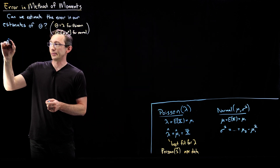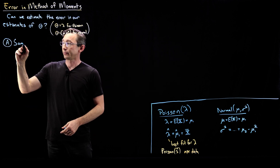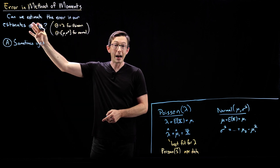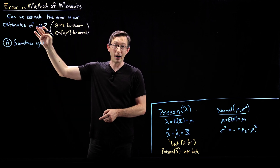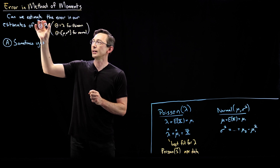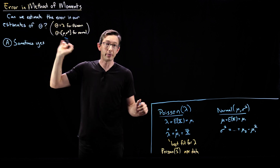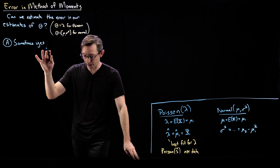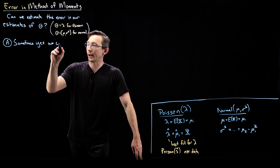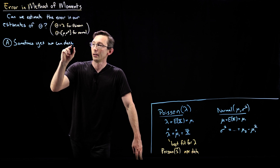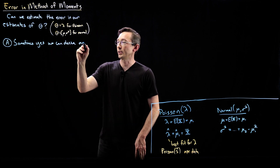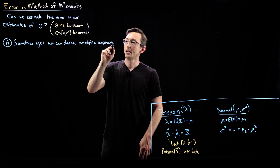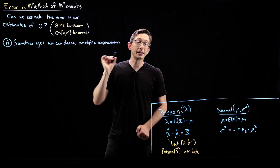Sometimes yes, we can derive estimates of the error in our estimates. It sounds weird to say, but you can get an estimate for the error in these parameter estimates directly from the probability distribution and probability arguments. Sometimes yes, we can derive useful analytic expressions.